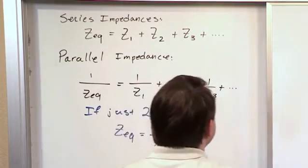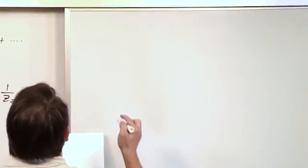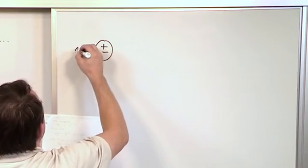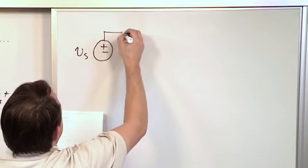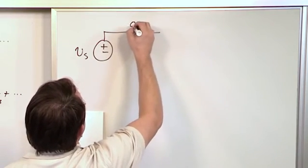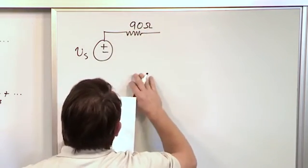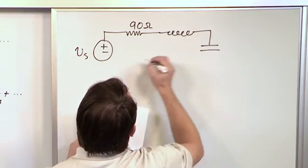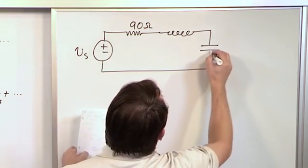So here we're going to use these facts to try to solve a problem. What if we have, here's a source, call it Vs, and let's say we have a 90 ohm resistor right here. And then let's say we have an inductance, and then let's say we have a capacitance, and then this is all connected back around to the source.